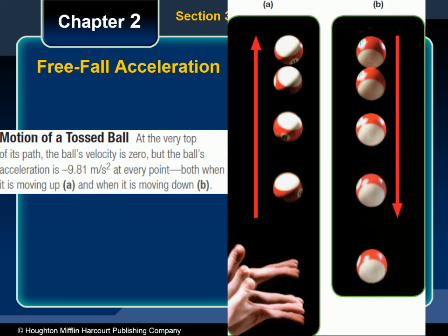Knowing the free fall acceleration makes it easy to calculate the velocity, time, and displacement of many different motions using the equations for constantly accelerated motion. Because the acceleration is the same throughout the entire motion, you can analyze the motion of a freely falling object during any time interval. Let's toss a ball into the air and think about its velocity and acceleration as it travels. When the ball is first tossed into the air, it is moving quickly upwards. It slows, then changes directions, and speeds up again on the way down.